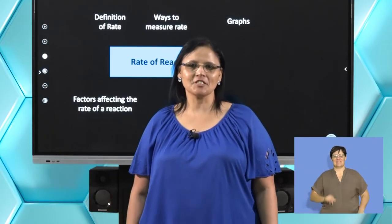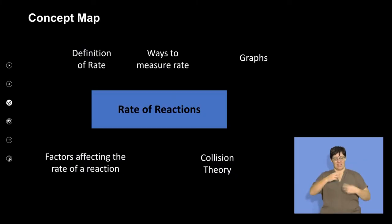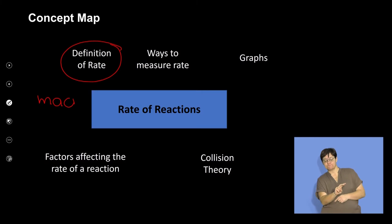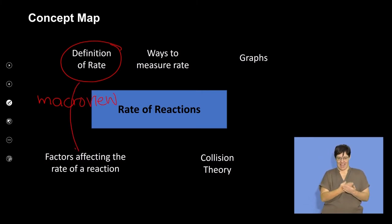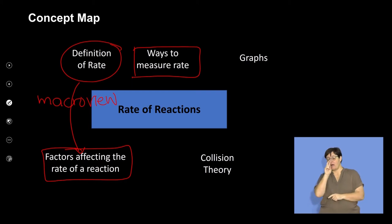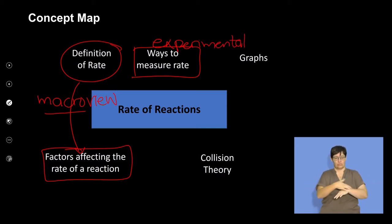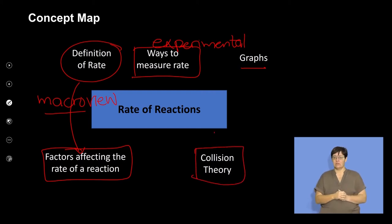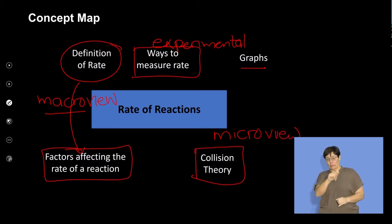Welcome back. We carry on with rates of reaction. Previously we looked at the macroscopic view — what we can observe: changes in temperature and colour. We linked that to the factors affecting the rate of a chemical reaction and the experimental ways to work out the rate. Now we are going to look at the sub-micro or microscopic view — what actually happens at a particle level that we cannot see.